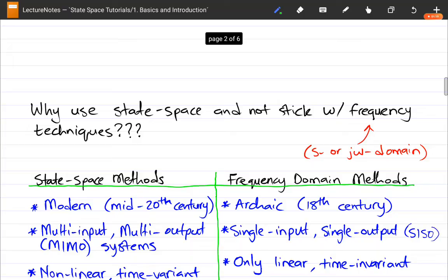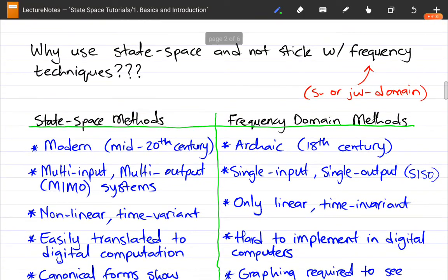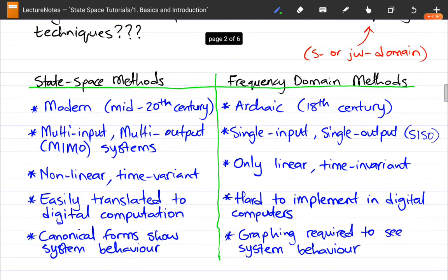So why would we choose to use State Space Modeling over the frequency techniques that we've already learned if you've been doing control systems for a while now? So I've created this table here to just make a comparison of State Space Methods versus Frequency Domain Methods. And hopefully you can see the advantages.